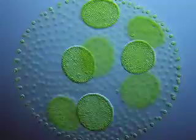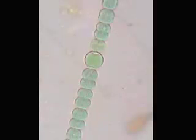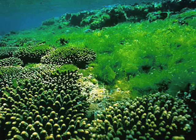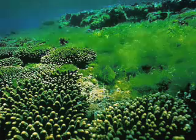Phytoplankton, such as algae and cyanobacteria, are the base of the aquatic food chain. When these organisms perform photosynthesis, they consume carbon and produce oxygen in a one-to-one ratio. They require carbon, nutrients, and sunlight to grow.